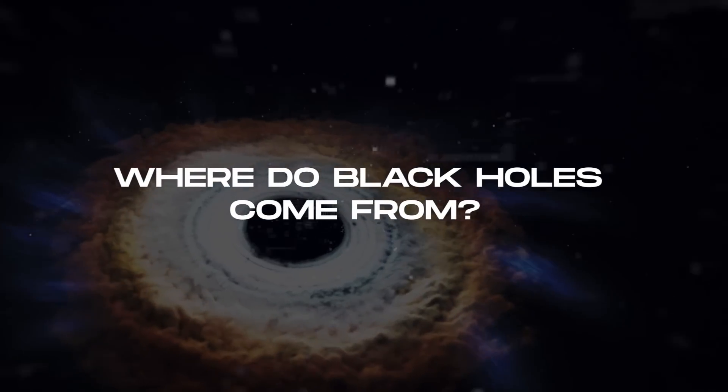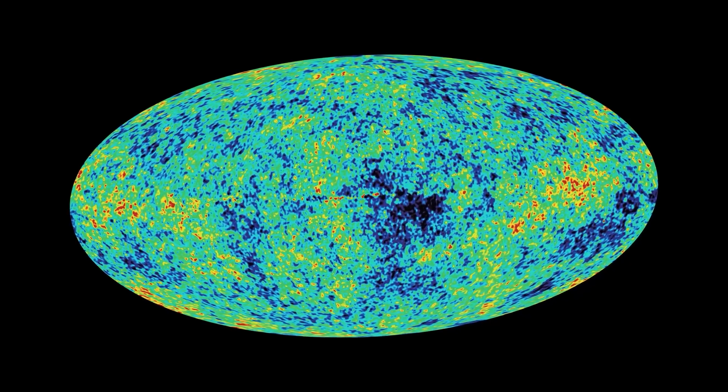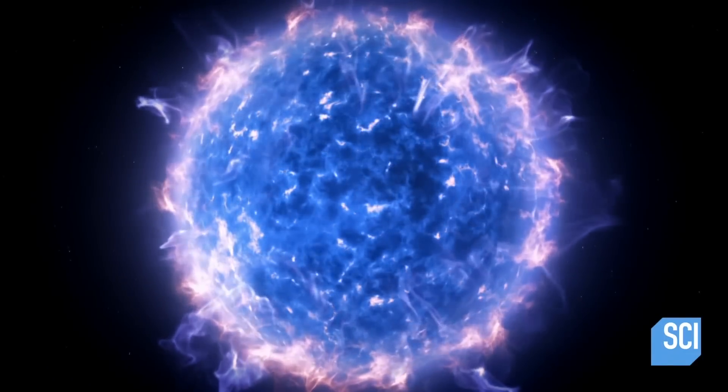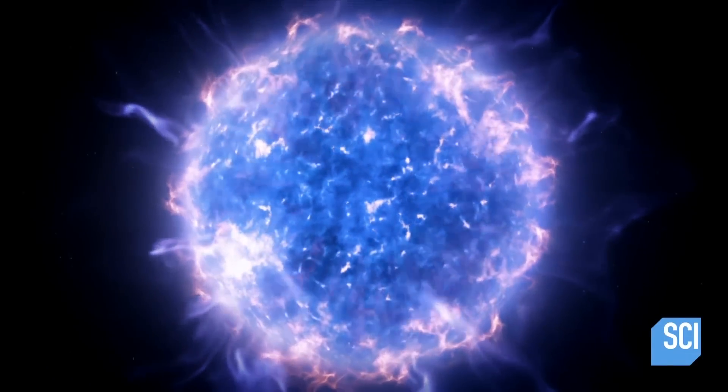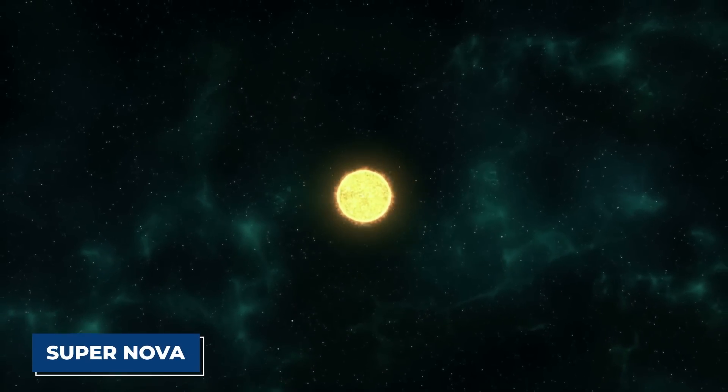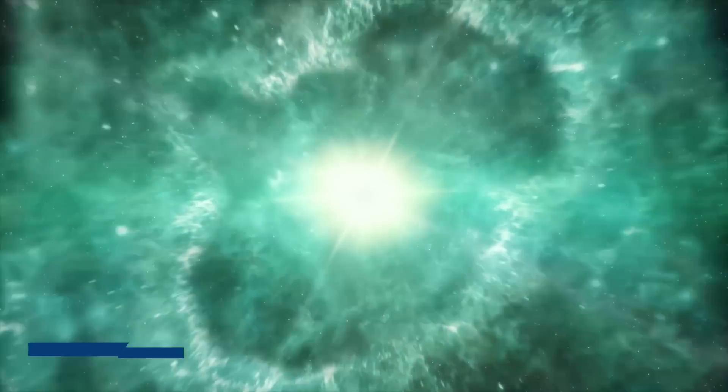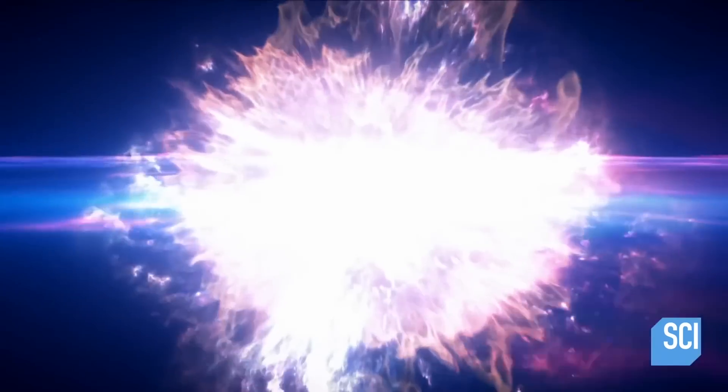Where do black holes come from? Primordial black holes are thought to have formed in the early universe soon after the Big Bang. Stellar black holes form when the center of a very massive star collapses in upon itself. This collapse also causes a supernova or an exploding star that blasts part of the star into space.